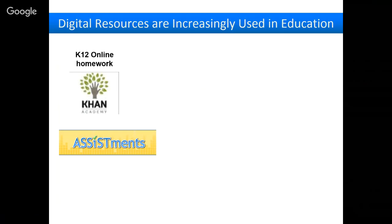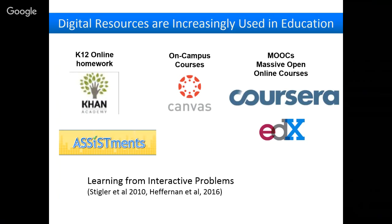We're all aware that digital resources are increasingly used in education — whether it's online homework like Khan Academy or ASSISTments, on-campus courses like Canvas or iDly, or MOOCs like Coursera and edX. But these resources don't always actually benefit learning. There are many studies showing that even content that looks good at first may not actually move the needle in terms of helping people.